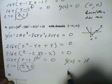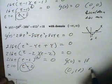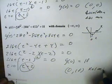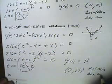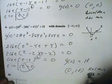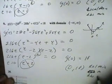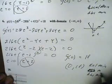So, (0, 18) is going to be a relative min, and also an absolute min as well.